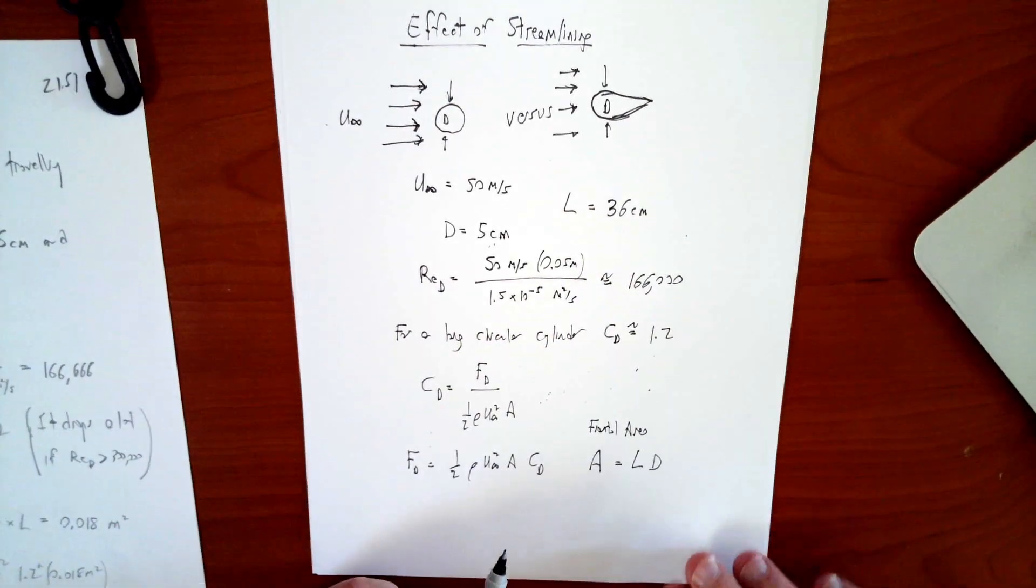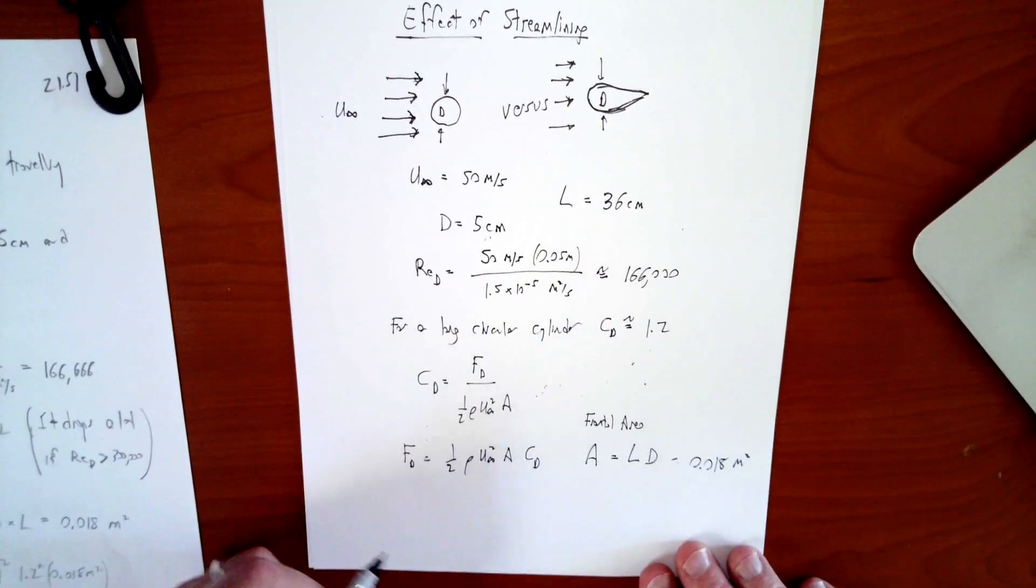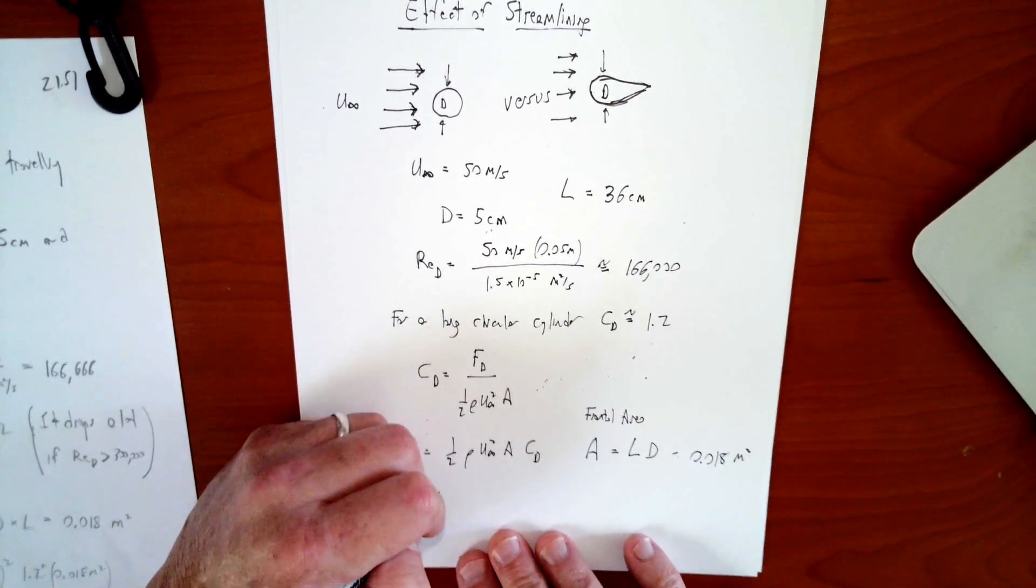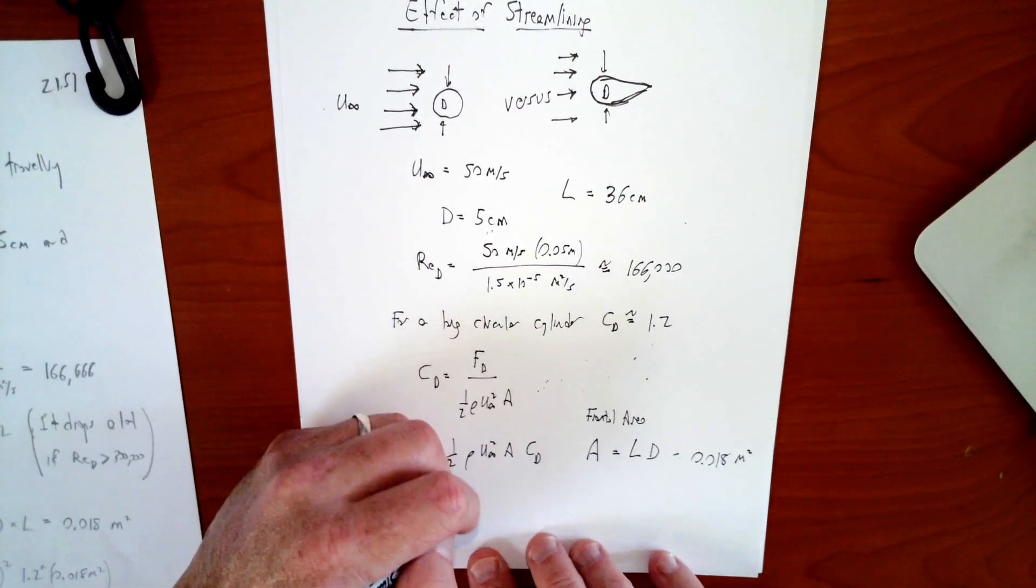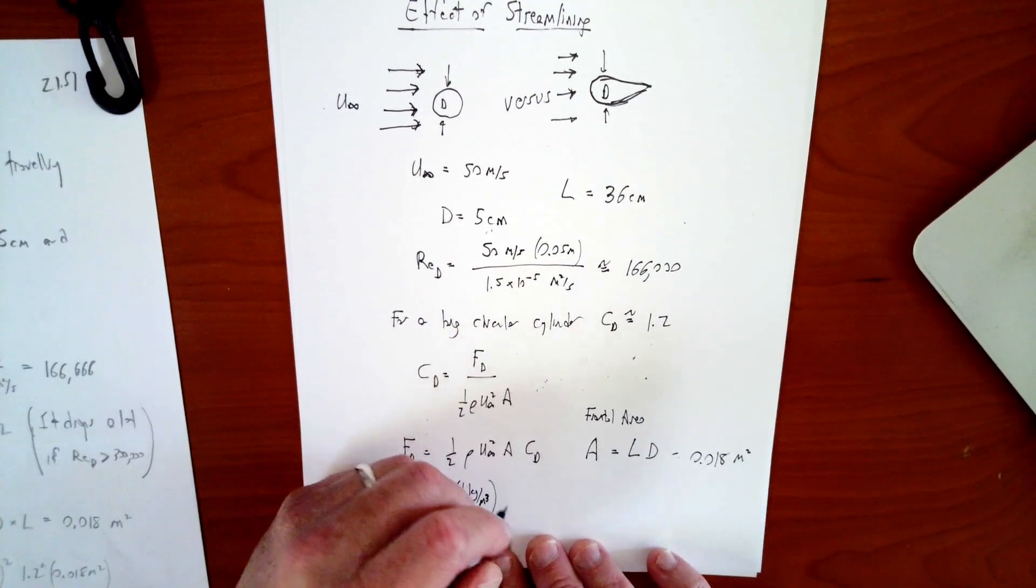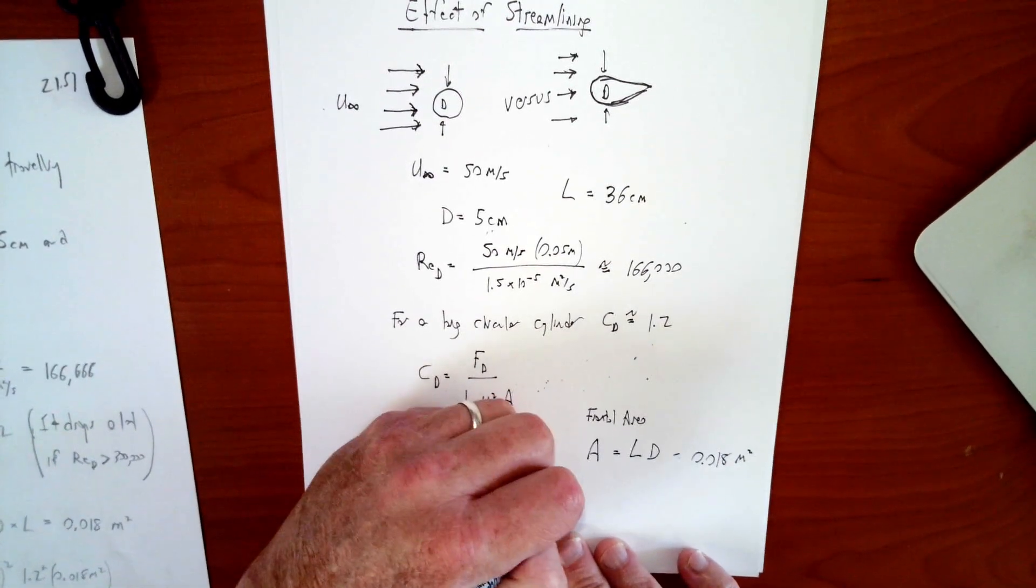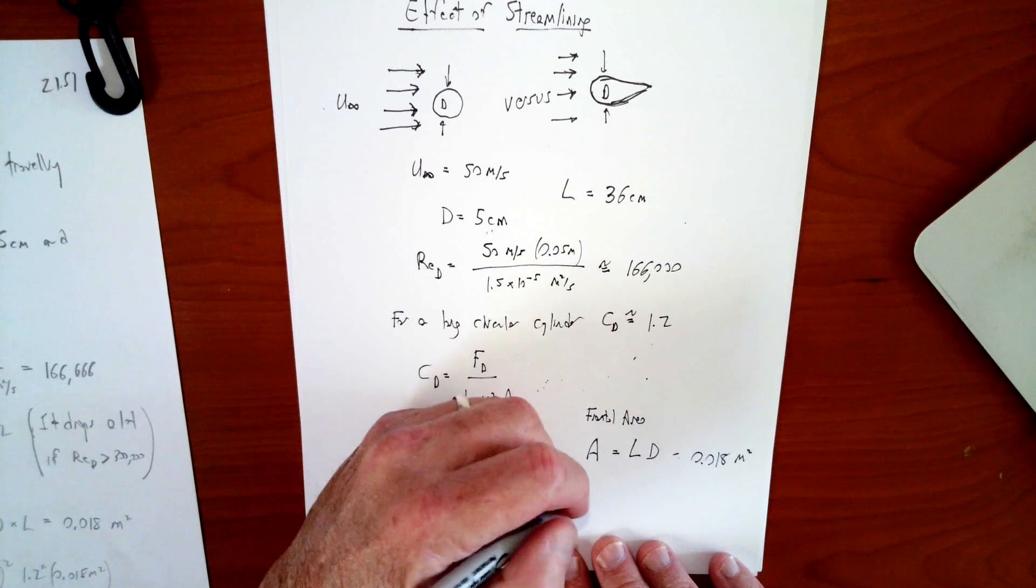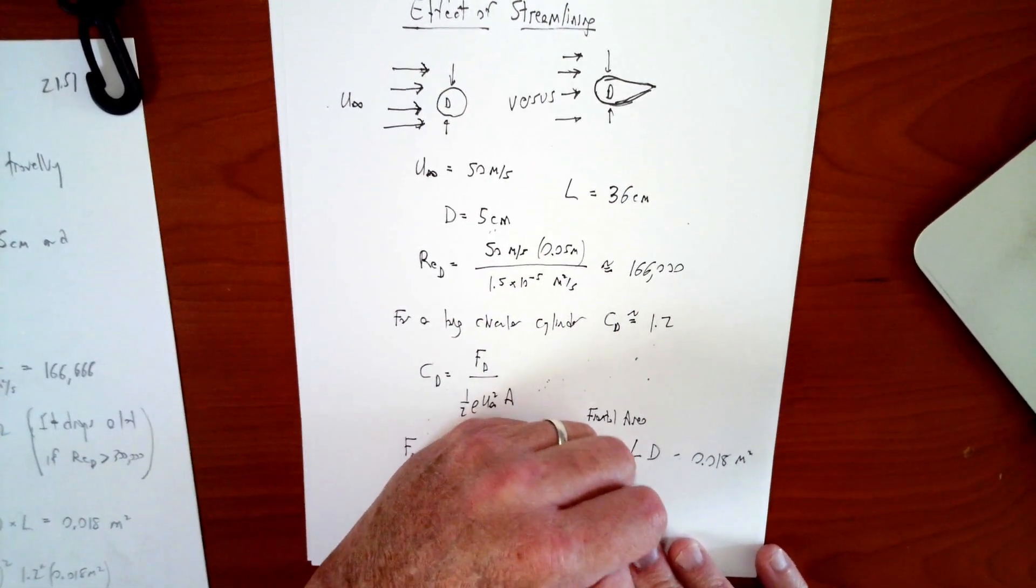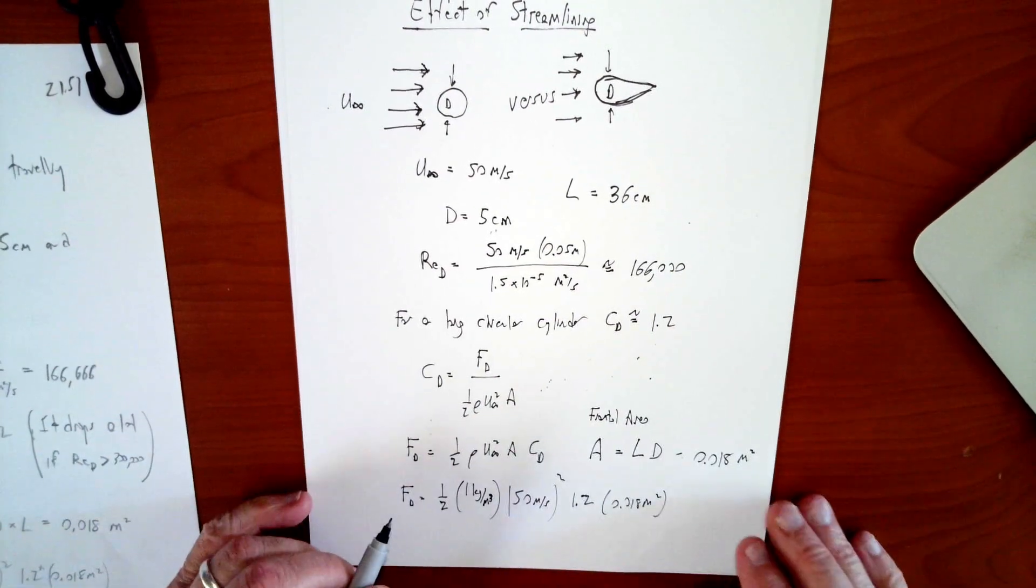And we can easily calculate that, comes out to be 0.018 meters squared. So that's our A for this formula, and we plug all of that in. FD equals 1 half. My rho is 1 kilogram per meter cubed, roughly for air. I've got 50 meters per second squared, I've got 1.2 as my C sub D, and 0.018 meters squared for my area, okay? So I'm going to crunch that into my calculator.